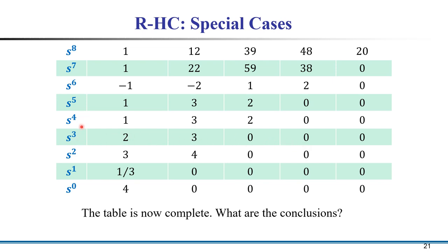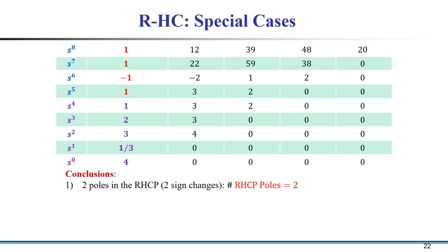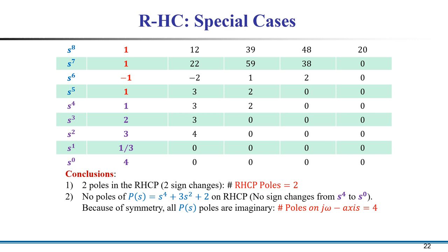There are 4 symmetric poles from the even polynomial P(s). The conclusion is: 2 poles in the right half complex plane (due to 2 sign changes: positive to negative, then negative to positive). For P(s) = s⁴ + 3s² + 2, from s⁴ to s⁰ there is no sign change, so no pole of P(s) is in the right half s-plane.